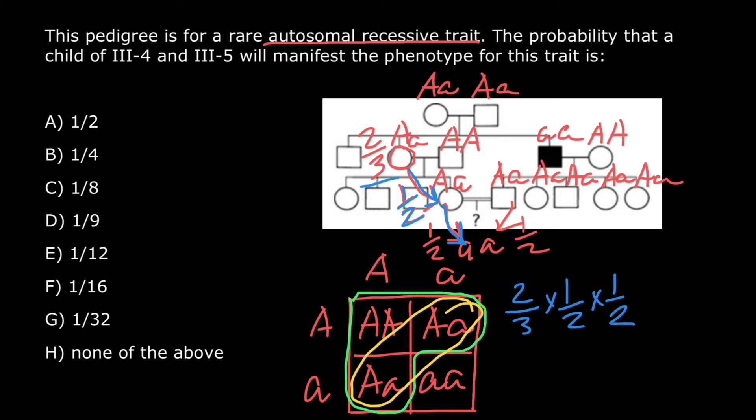And from this side, from the father side, again times 1 half. And we are going to have 2 times 1 times 1 times 1 is going to be 2. And 3 times 2 is going to be 6, times 2 is going to be 12, and times 2 is going to be 24.